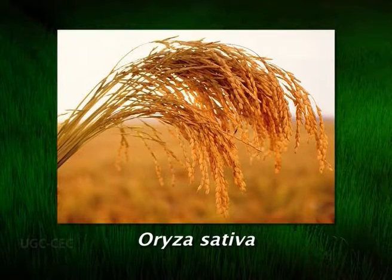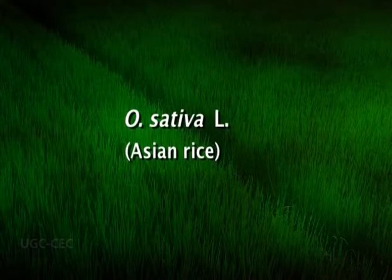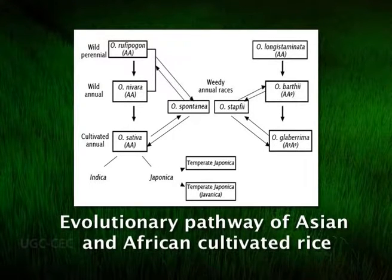The botanical name of rice is Oryza sativa. Rice belongs to the family Poaceae. The basic chromosome number of the genus is 12. Two cultivated species of rice include Oryza sativa and Oryza glaberrima. Oryza sativa is cultivated throughout the warmer regions of the world, whereas the cultivation of Oryza glaberrima is confined to tropical Africa.